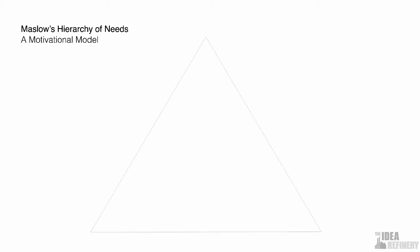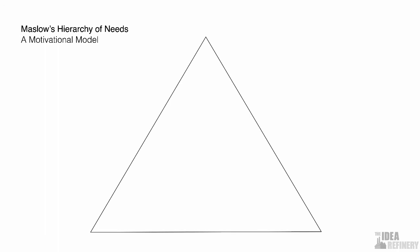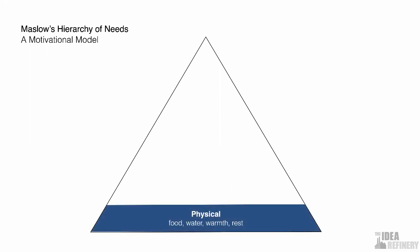Maslow's hierarchy of needs has been around for many decades. While this is by no means an absolute description of psychological motivation, it does give us some clues as to why people behave the way they do. In Maslow's hierarchy of needs, we see human needs expressed as a pyramid. On the bottom of that pyramid, we see the basic physical needs of food, water, warmth, and rest. What this describes is the behaviors that people will engage in to satisfy those needs — growing their own food, for example, or going to a restaurant.